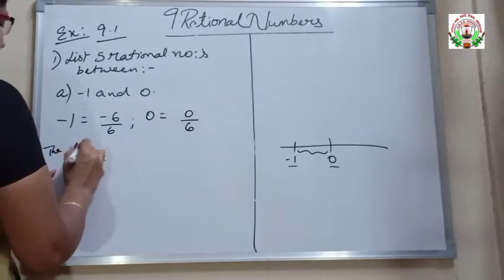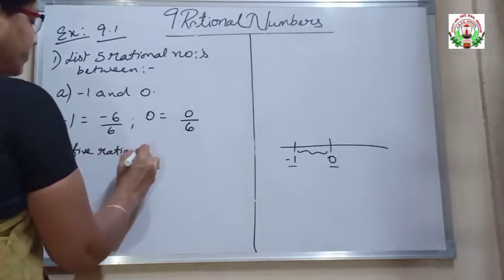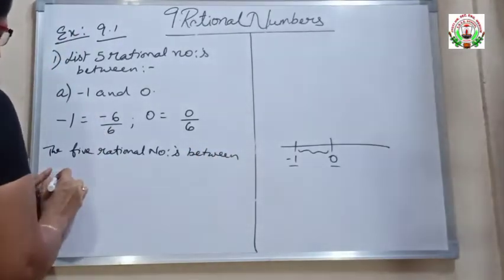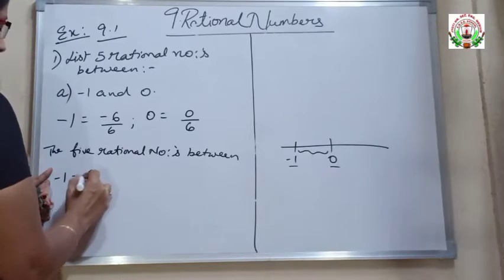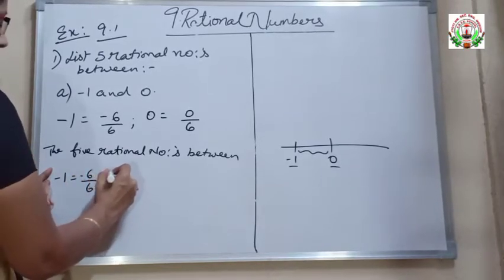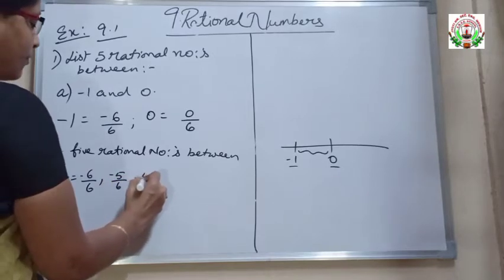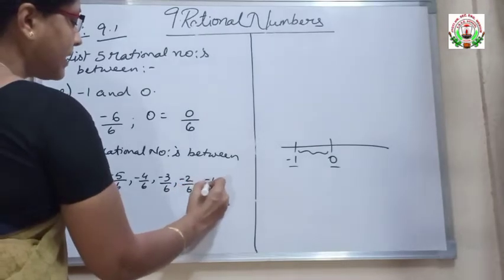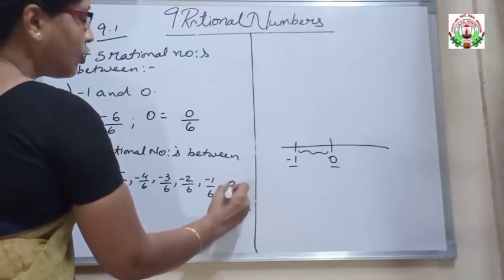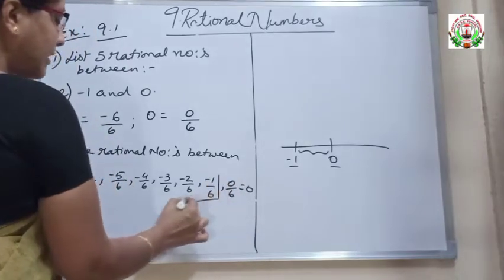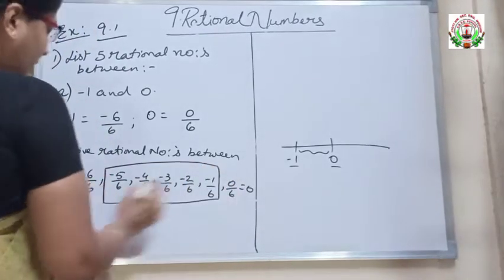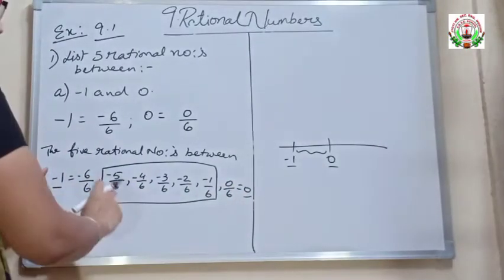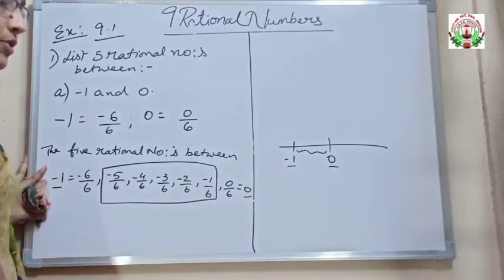Now we can find the Rational Numbers between minus 6 by 6 and 0 by 6. After minus 6 by 6, the numbers are: minus 5 by 6, minus 4 by 6, minus 3 by 6, minus 2 by 6, minus 1 by 6, and then 0 by 6, which is 0. So these are the 5 Rational Numbers between minus 1 and 0: that is 1, 2, 3, 4, 5.